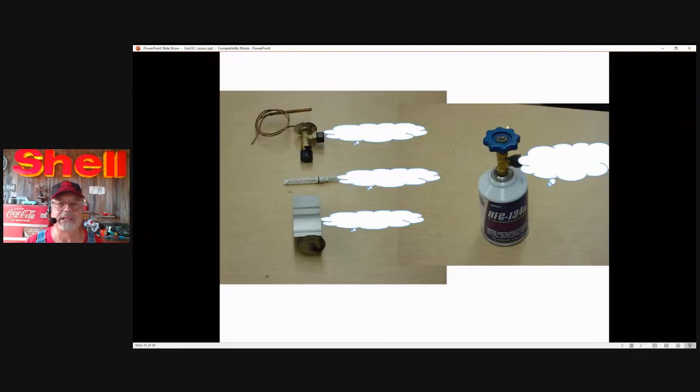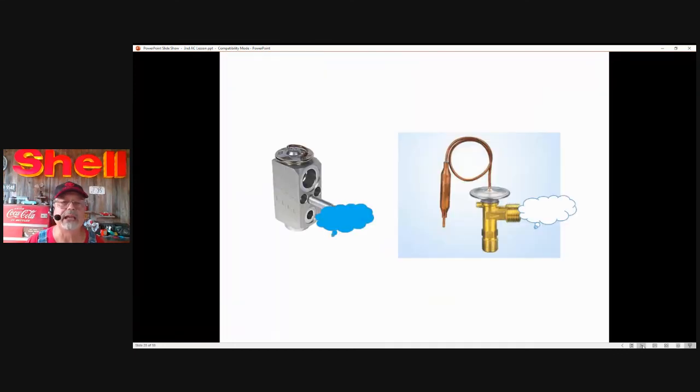On the right, I still have that can representing the refrigerant being sprayed out. Over here on the left, I have two expansion valves. They're all doing the same thing. As the refrigerant passes through these devices, whether it's the block valve, the 90 degree valve or the expansion tube, there is a change of pressure, change of temperature. It's just like the magic that comes out of the can. It's cold, just coming out of the can.